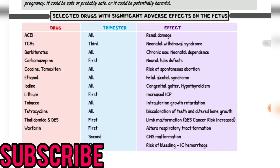Next are selective drugs with significant adverse effects on the fetus. ACE inhibitors: all trimesters, contraindicated — adrenal damage. TCAs: third trimester — neonatal withdrawal syndrome. Barbiturates: all trimesters, chronic use — neonatal dependence. Carbamazepine: first trimester — neural tube defect.